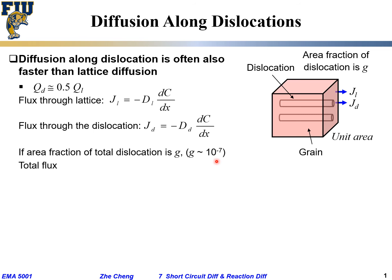Then the total flux is the flux through L for lattice plus the flux through D for dislocation. But remember, flux is flow per unit area, so that flux has to be modulated by g, the area fraction of the dislocation. Otherwise if I just add JD, that's too high a number. I have to modulate by the area fraction of dislocation.